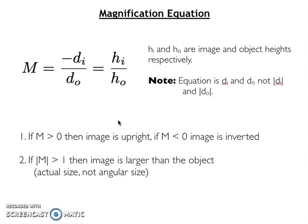If the absolute value of magnification is larger than 1, it means the image is larger than the object.